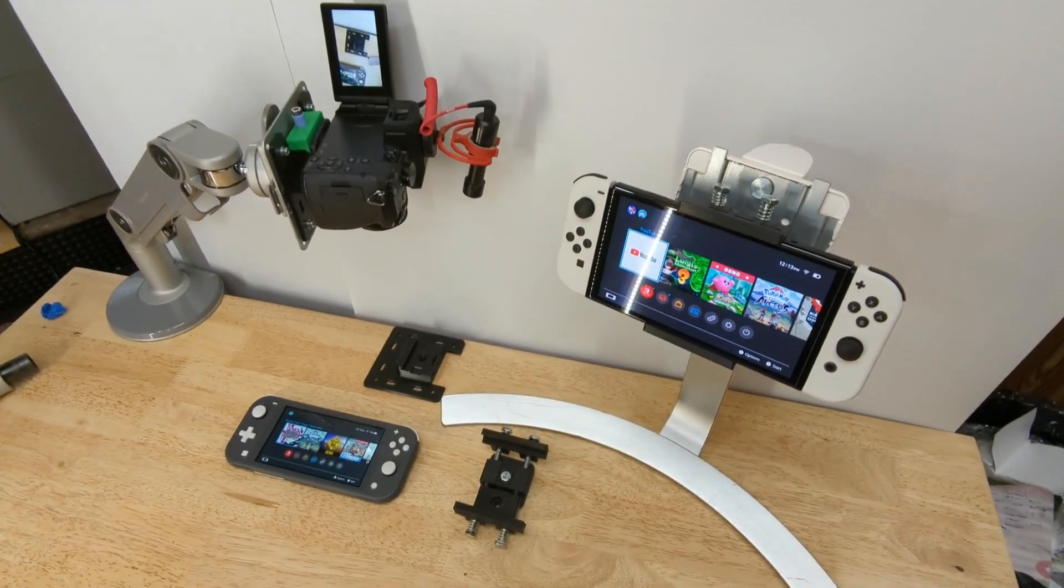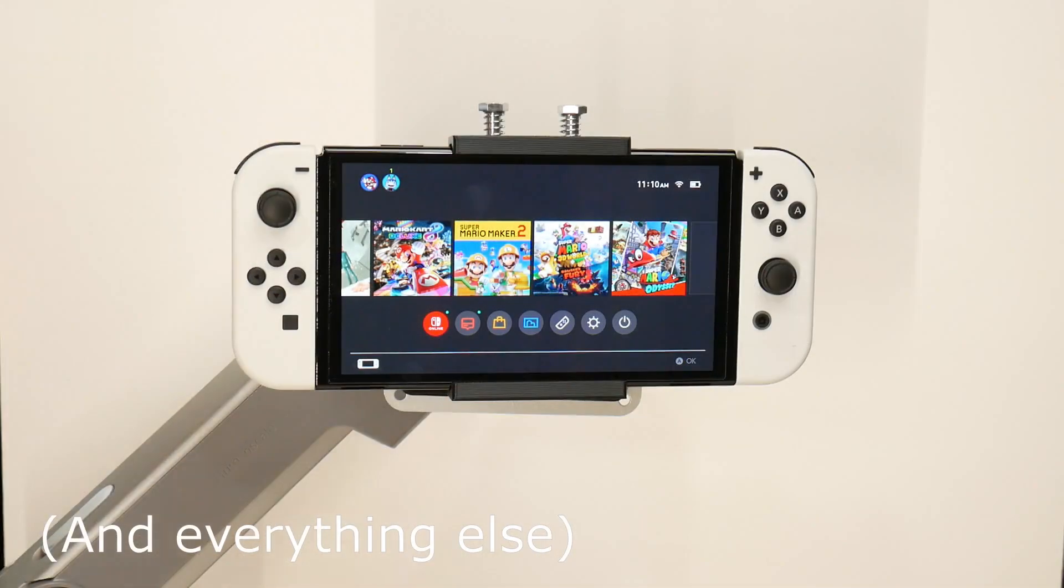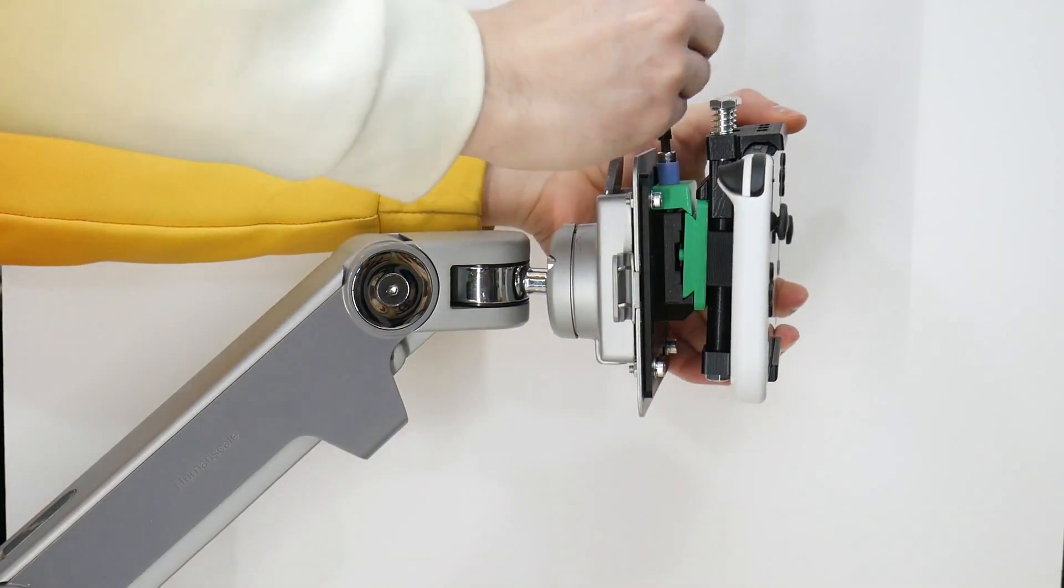Here's a universal mount bracket for the Nintendo Switch. It's VESA compatible and also supports a quick release mounting bracket if you want to go from sloth to boss.